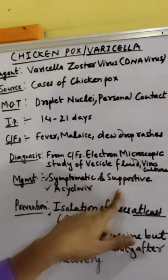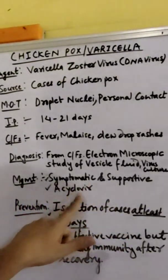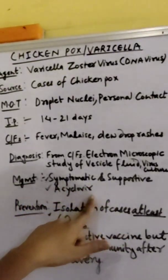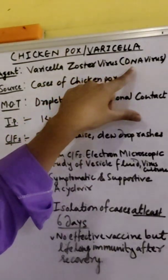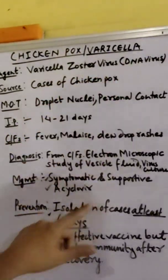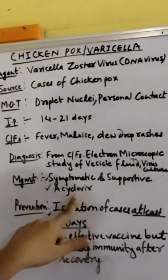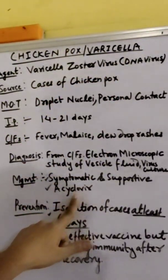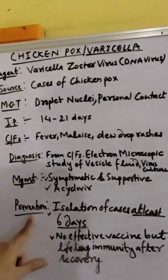Management is symptomatic and supportive. Acyclovir, which is an antiviral drug, is given because it is a viral disease. Acyclovir is administered to those who are affected by chickenpox.